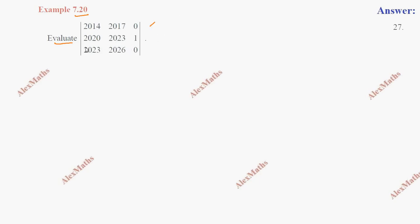That's why the properties are used to reduce. What we need to do is C2 gives C2 minus C1. That's why we need to reduce.